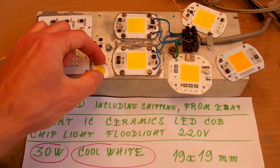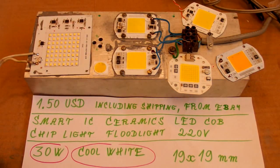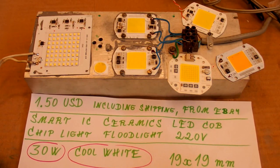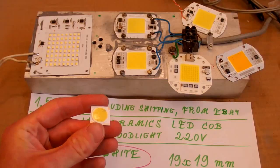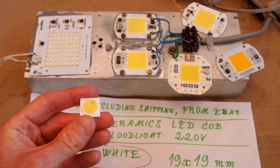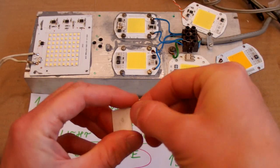Seriously? Such a tiny LED, 30 watts. And it's cool white and it's 19 by 19 millimeters and it's ceramic. All the other ones are on an aluminum substrate but this one is on a ceramic substrate.